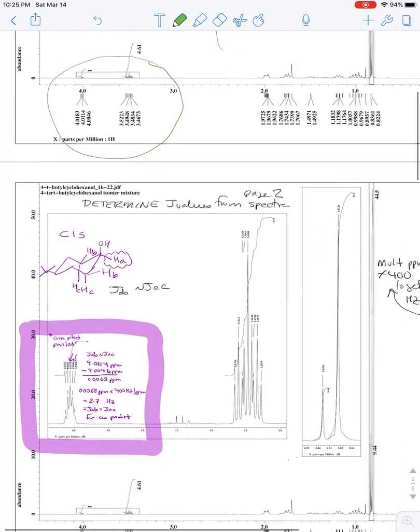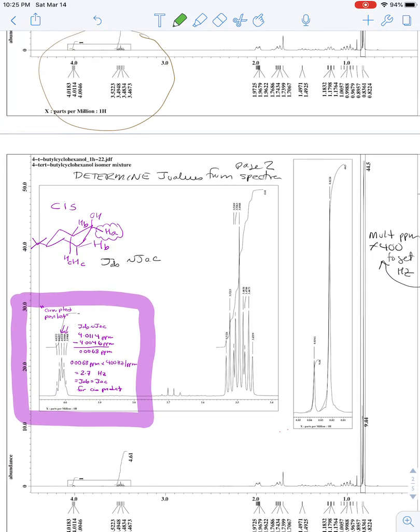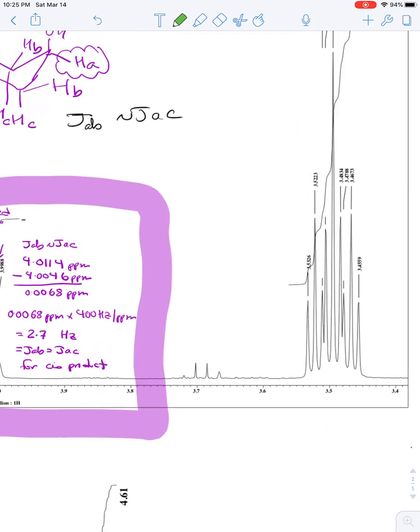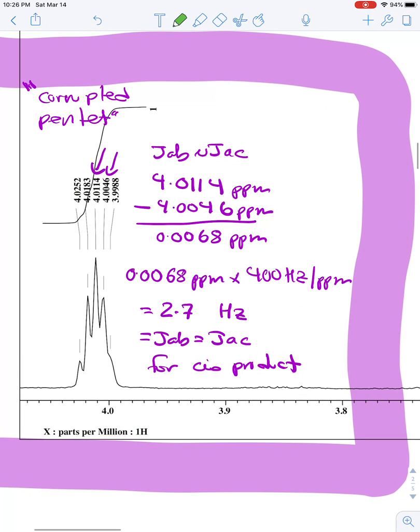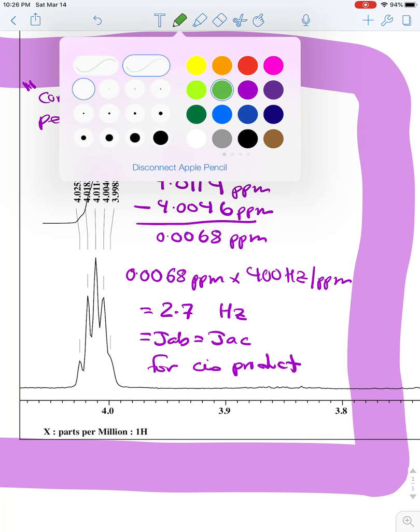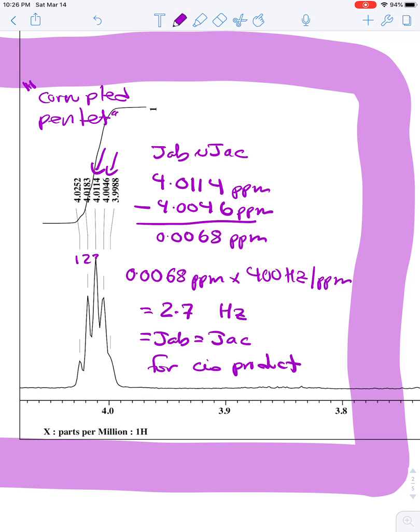So we'll go to the next spectrum, which is a copy of the first one, to calculate the coupling constants for this corrupted pentet. And so that's the only one that's shown here. And what we want to do is pick any two elements of this corrupted pentet. I picked the third and the fourth ones, because I thought the shoulder was maybe a little bit sketchy.